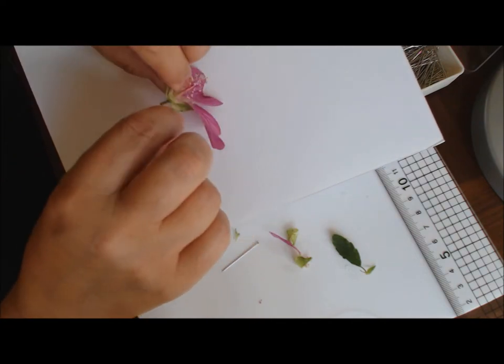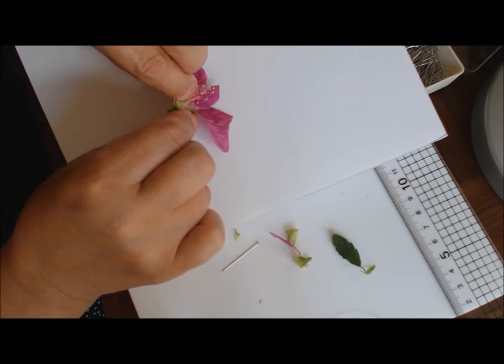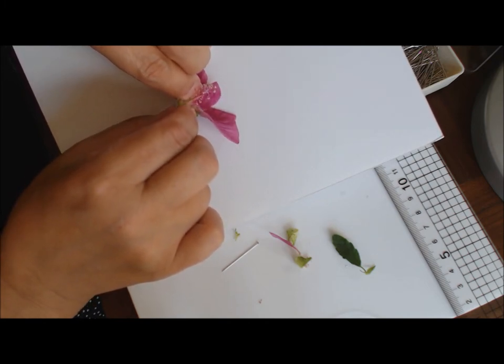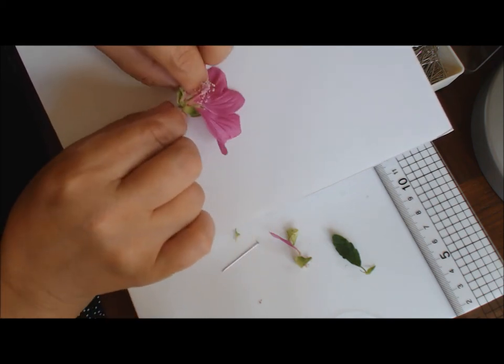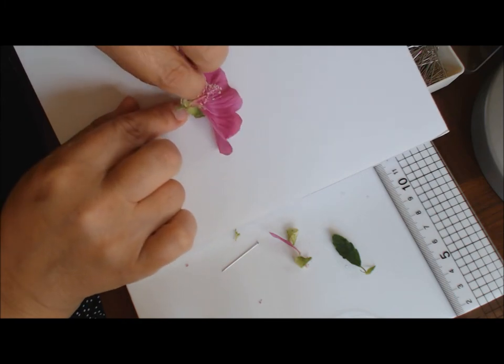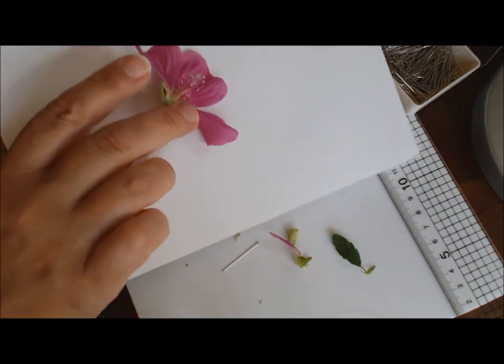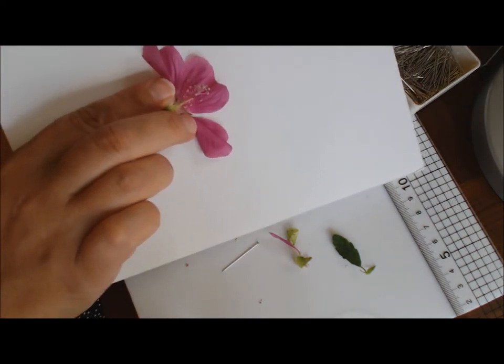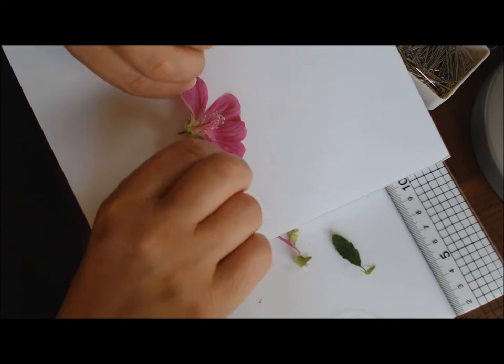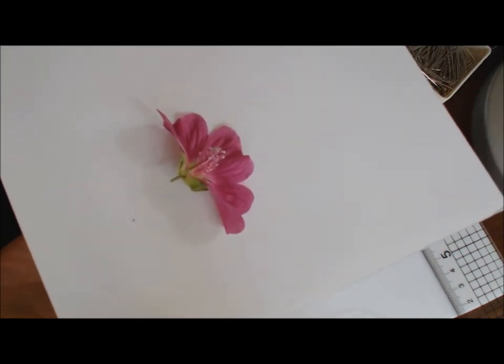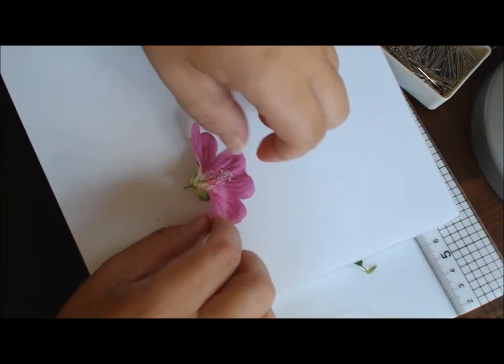And skewer the flower through the ovary or the receptacle. Make sure you get it in position. Slightly fiddly. And again, be careful. That positions your flower into place with just a cross section of it.